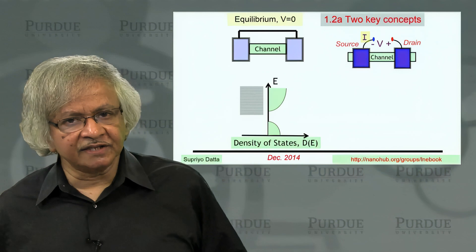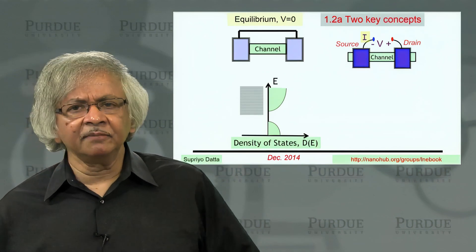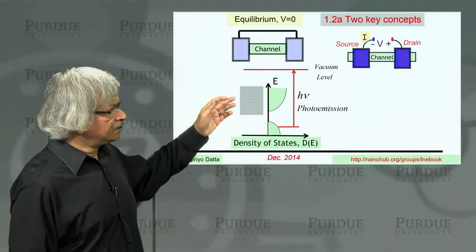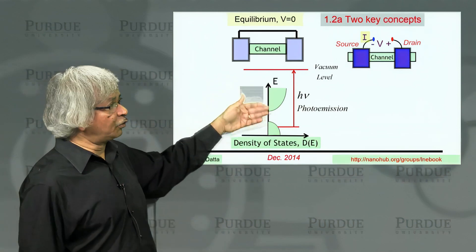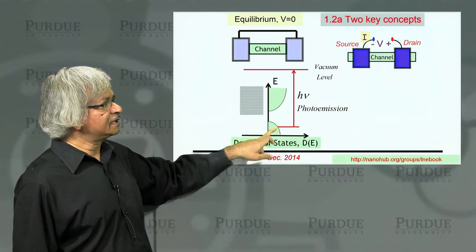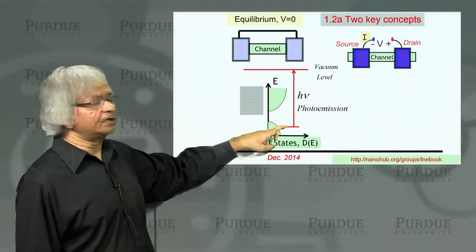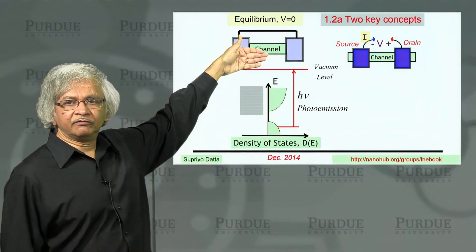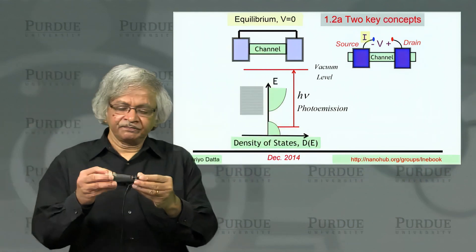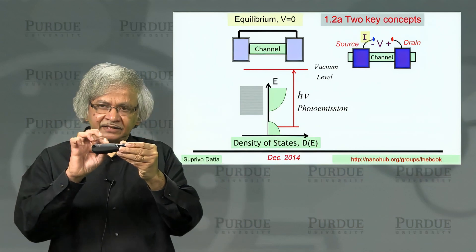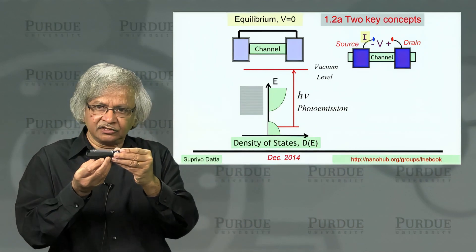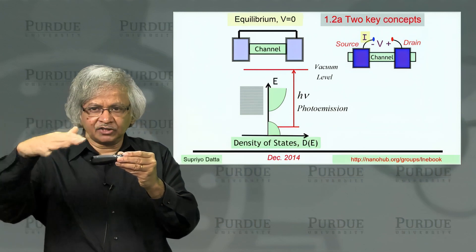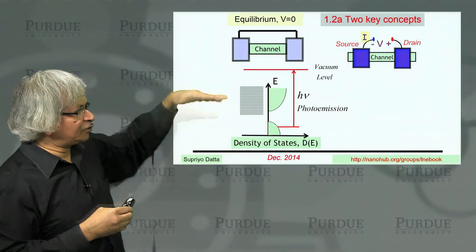How do you know what's the density of states? Experimentally you usually measure it using different types of experiments. The most common one is photoemission. You have electrons here, and if you hit it with light, you can excite an electron and knock it out into the vacuum.